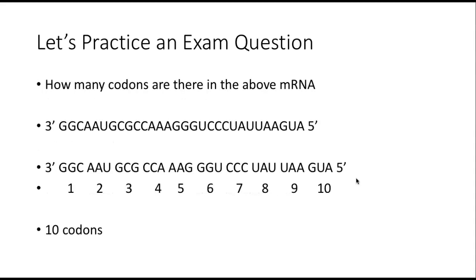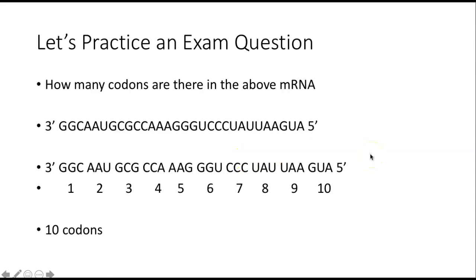Now for the new material. You've just made your mRNA, written out 3-prime to 5-prime with T's replaced by U's. Let's find how many codons there are. Codons are 3 letters at a time, so parse the mRNA into 3-letter chunks. What you find is there are 10 codons: GGC, AAU, GCG, CAA, AGG, GUC, GAA, UGG, CGG, and so on — 10 codons total.